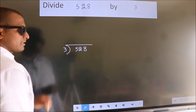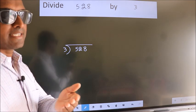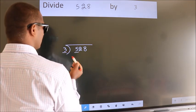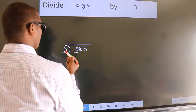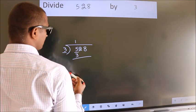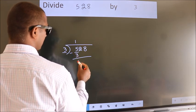This is your step 1. Next, here we have 5, here 3. A number close to 5 in 3 table is 3 1s 3. Now we should subtract, we get 2.